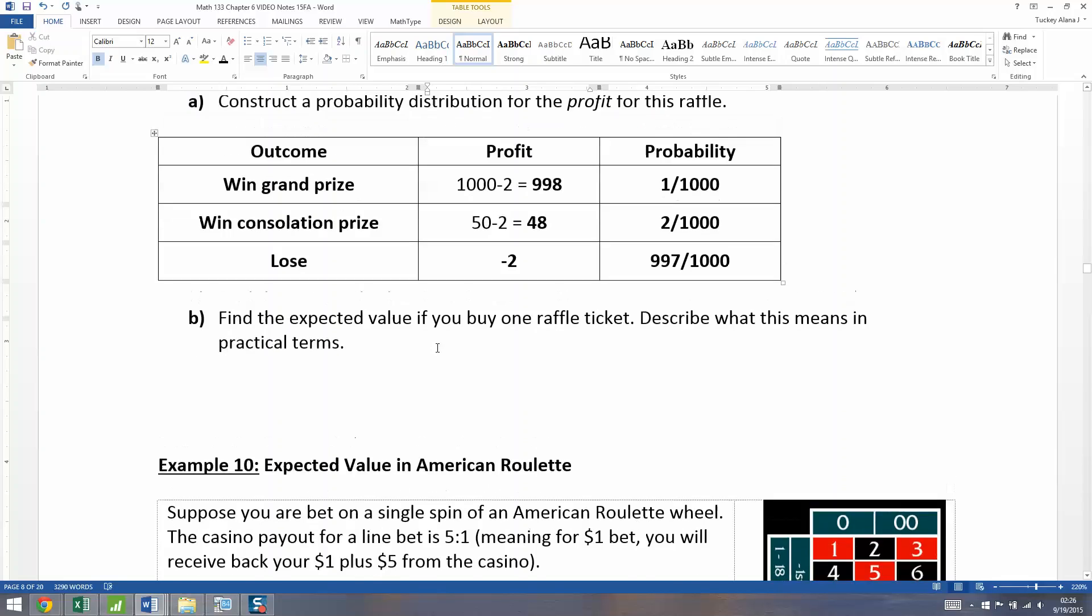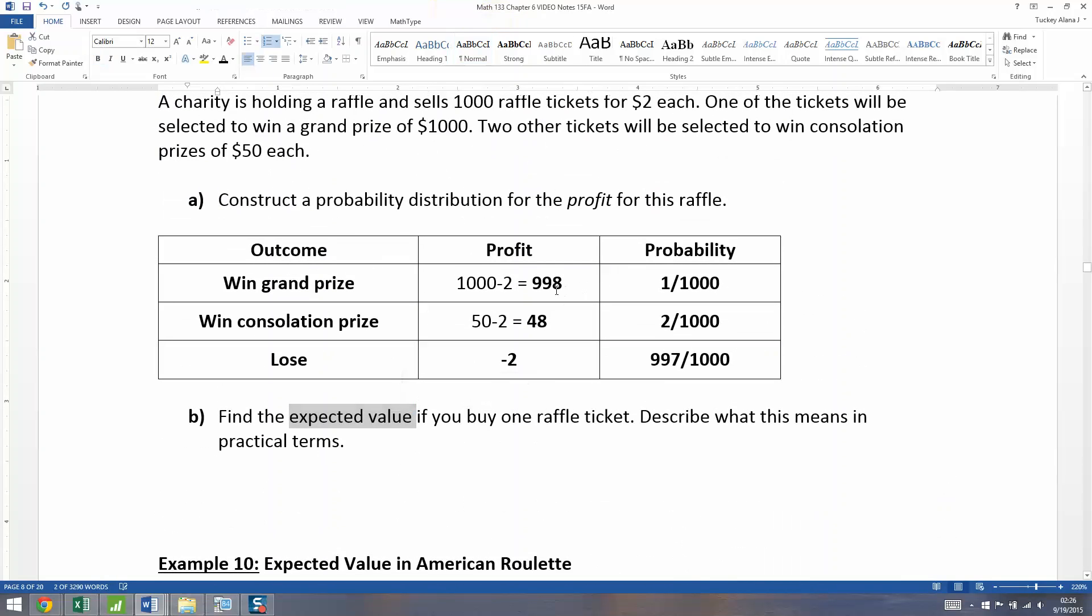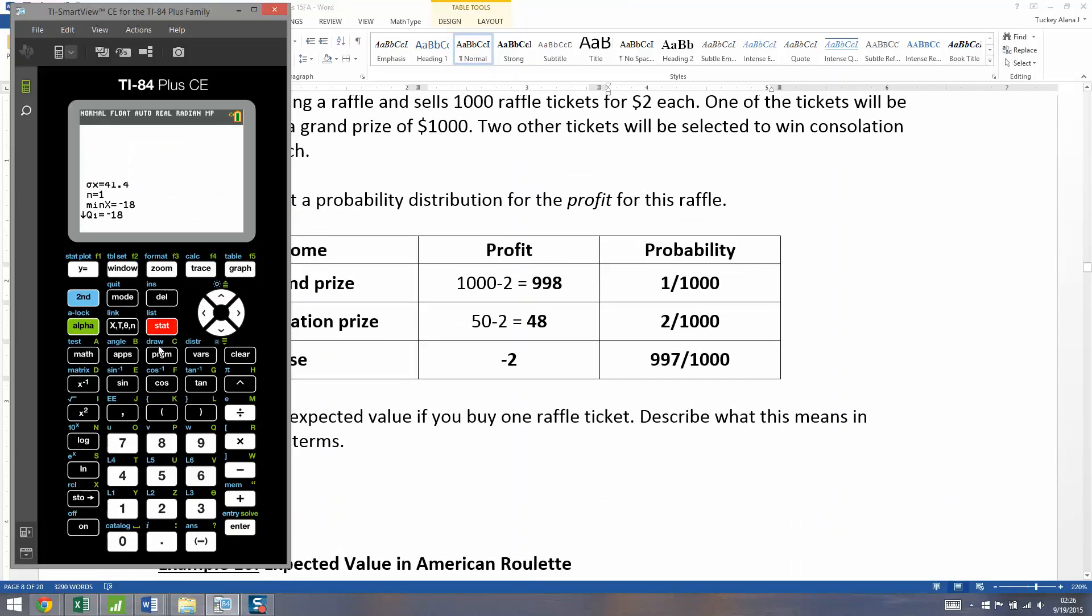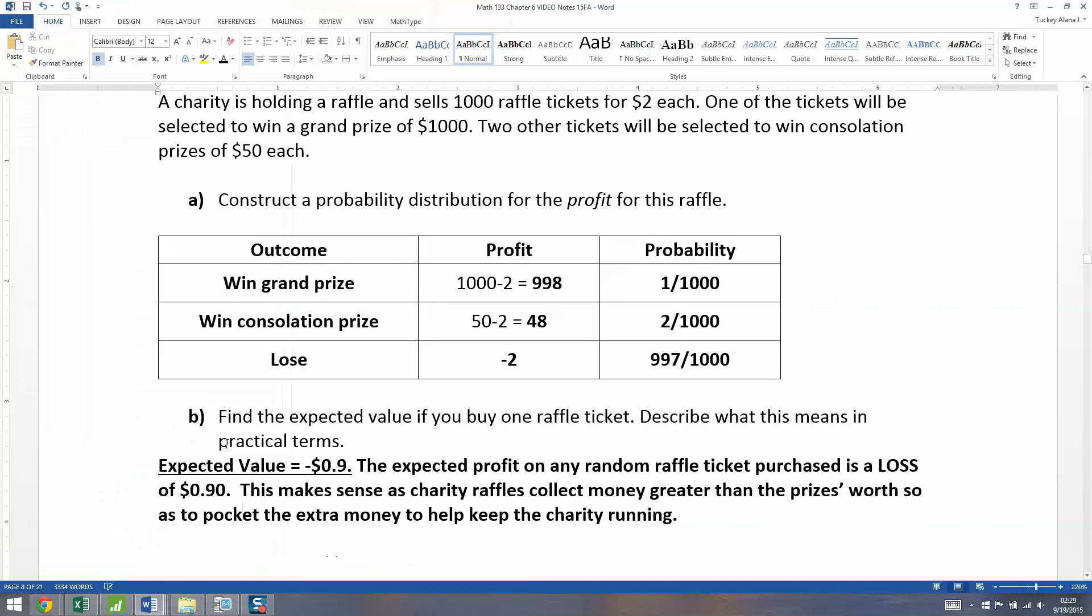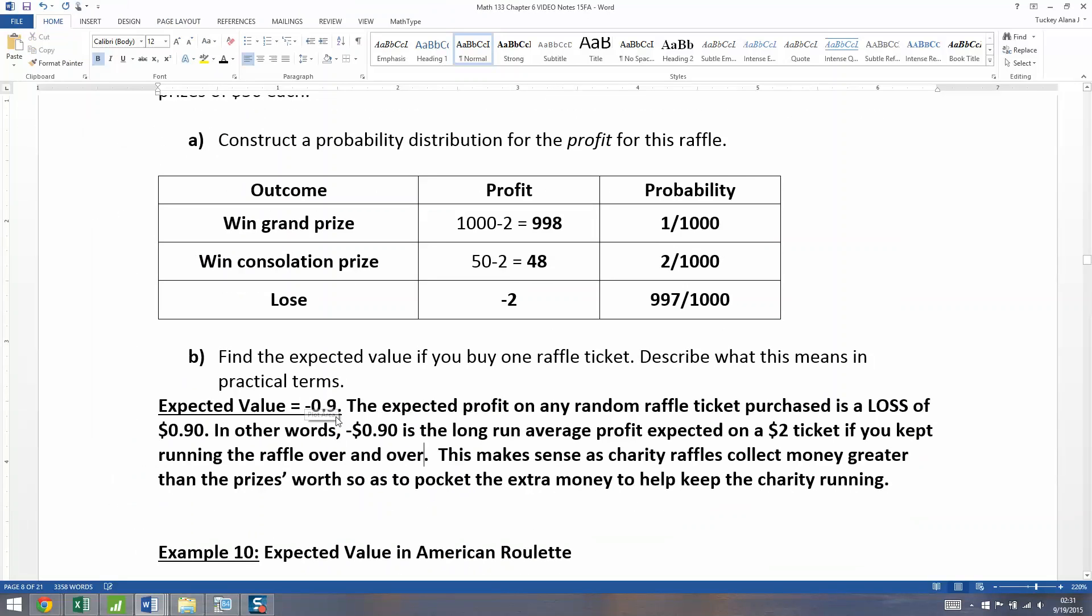So if you buy one raffle ticket, what's the mean? What's the expected value? So what you want to do is you want to multiply each of these profits times their probabilities and add them up. Simple as that. Now, if you want, you can just do this in stat edit. So I'm going to clear these out and type these in. So 998, 48, and negative two. Make sure you use the little negative at the bottom of the calculator. And then 1 out of 1000, 2 out of 1000, and then 997 out of 1000. Stat, calculate one variable. And there you have it, negative 0.9.